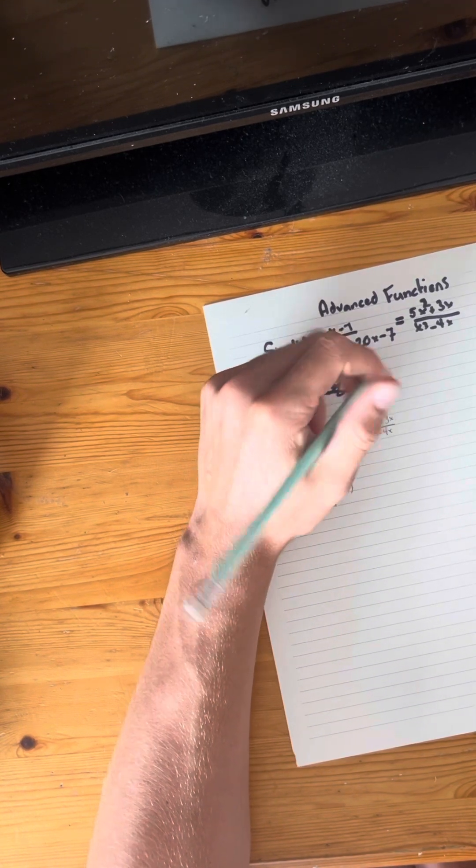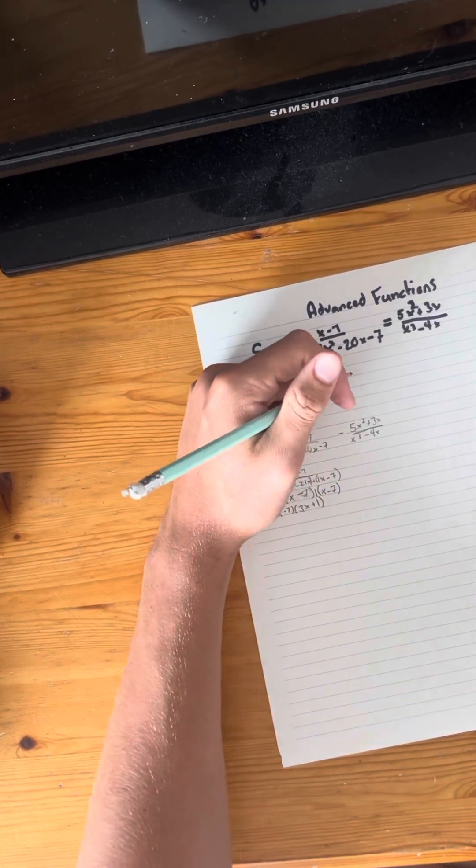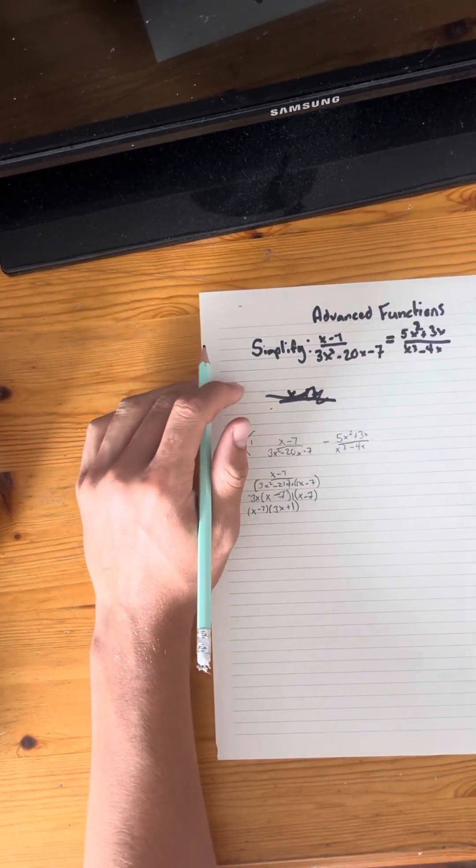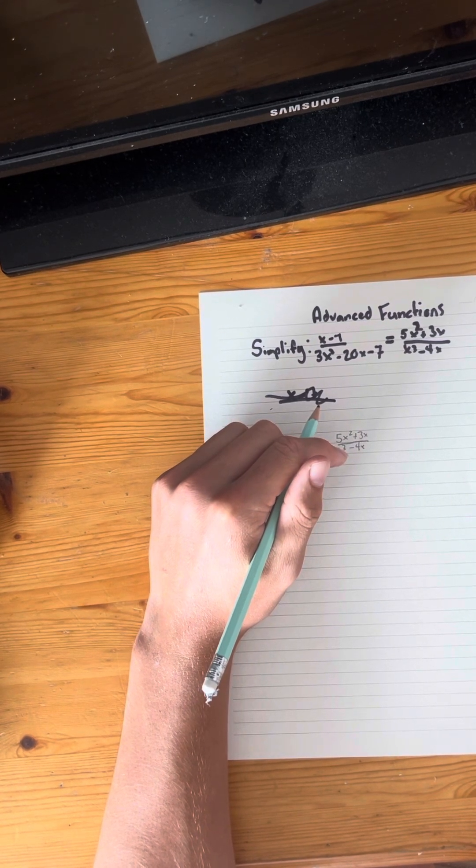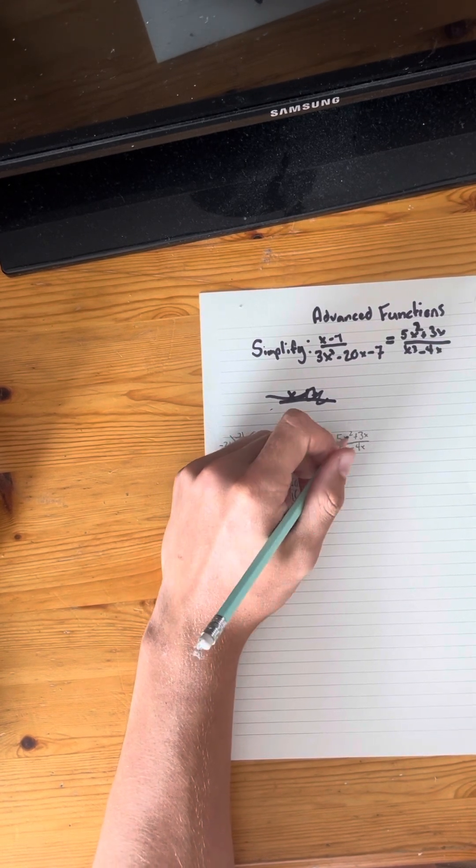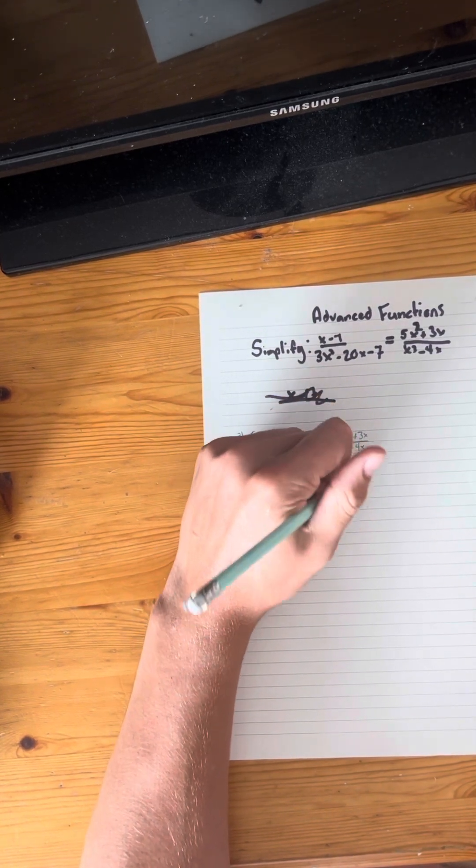Now we know here, first thing we're going to want to do is same as this side, is factor it all out. So to start, we are going to realize that there are two x's here, so that means that you can do x.